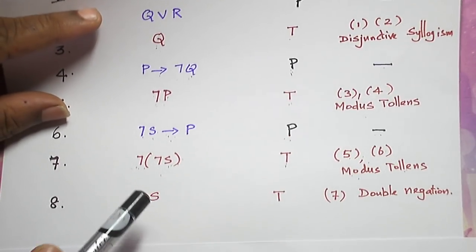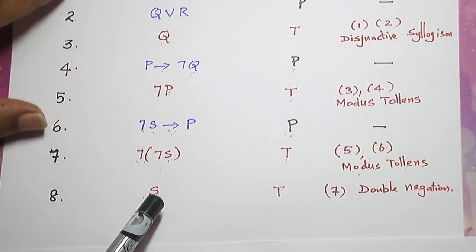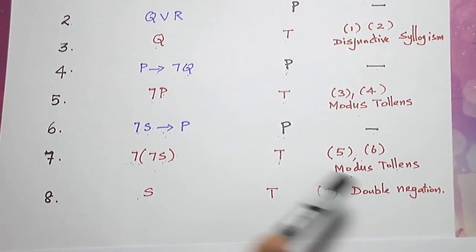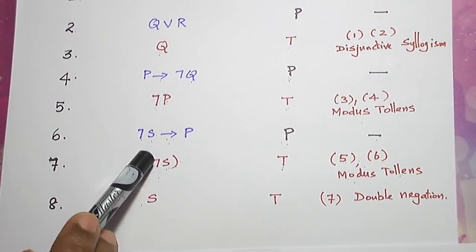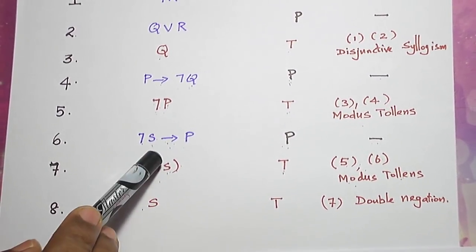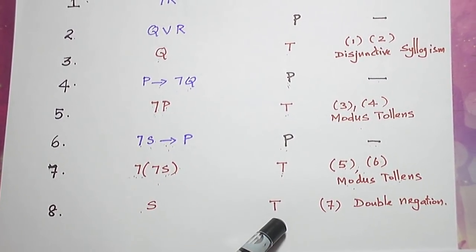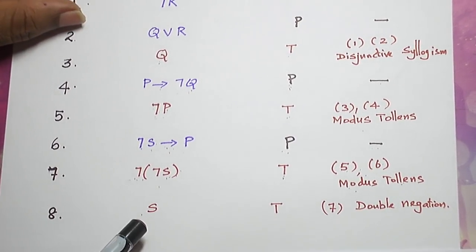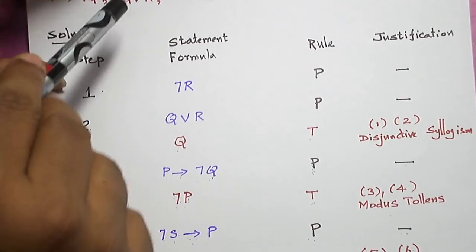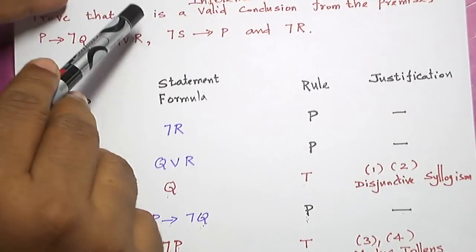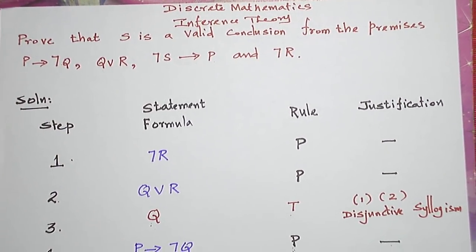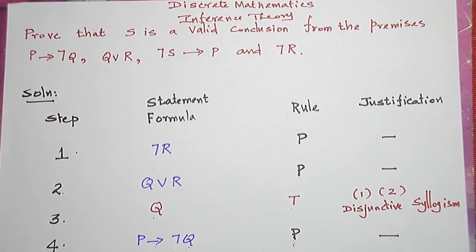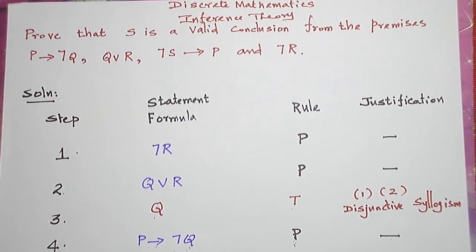Negation of negation S is S by double negation law, derived from step 7 by rule T. So we have derived S as a valid conclusion from the given premises. Let us meet with another problem in the next video. Thank you.